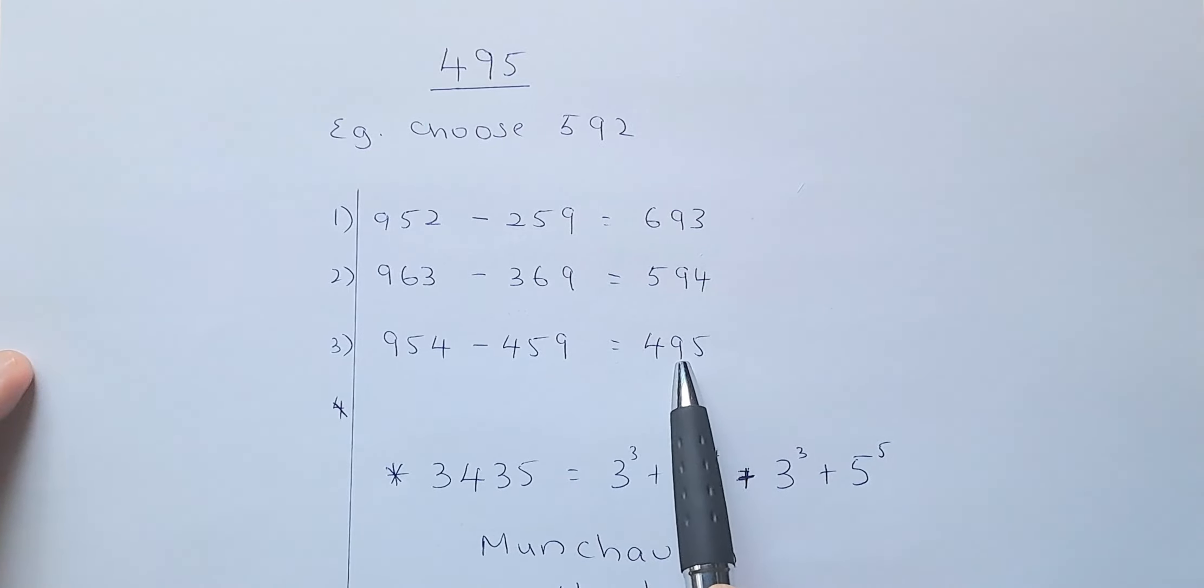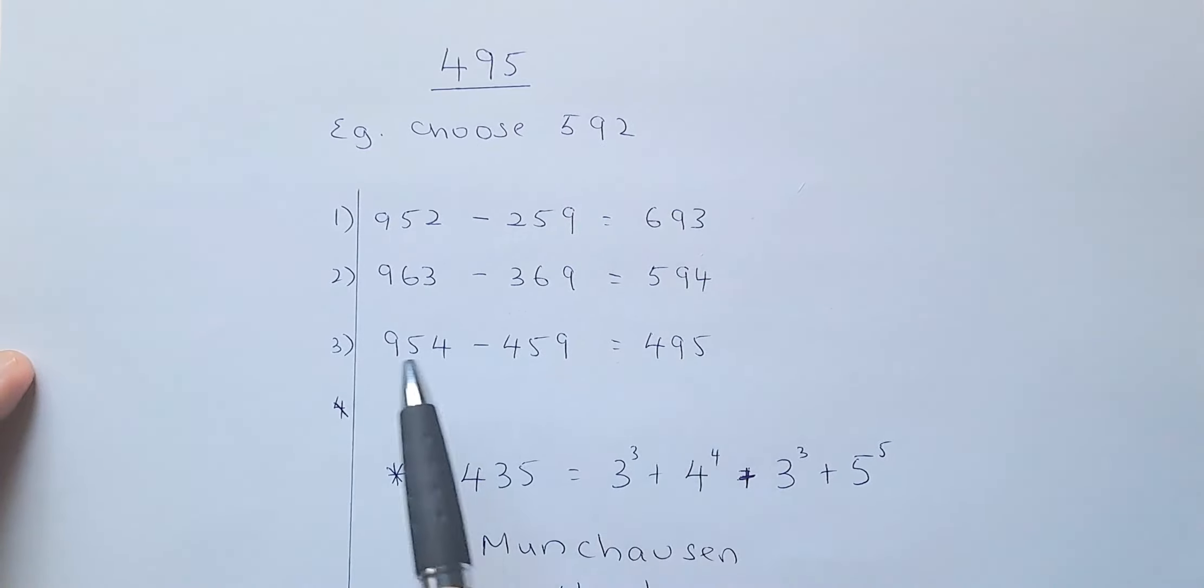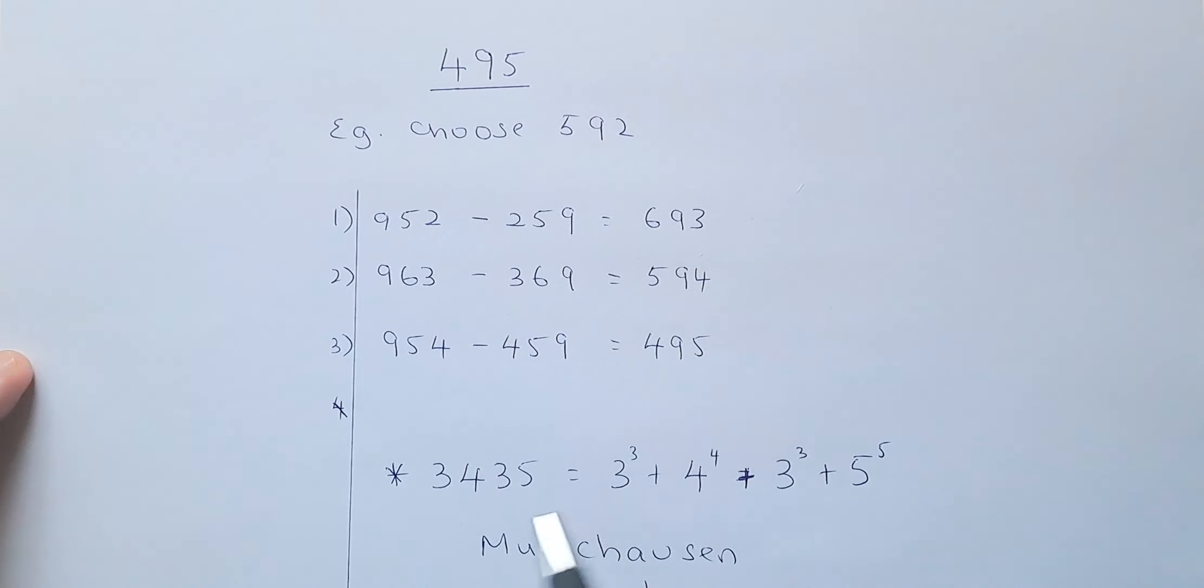So if you rearrange this number, it's going to be again, you're going to get 954, which is going to be a loop. So you will get the same answer again and again. So this is called the Capricus constant. Have a go at another number and see whether it works. It should work, because this is done by Capricus, who is a well-renowned mathematician in the world.